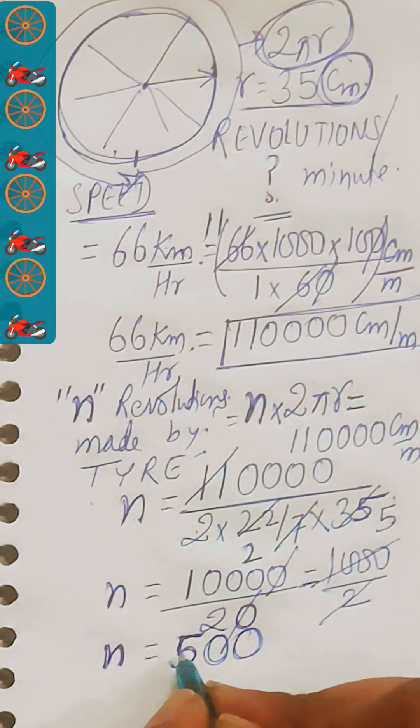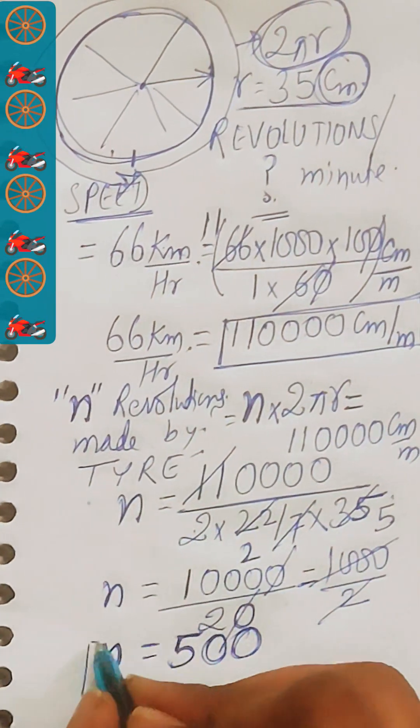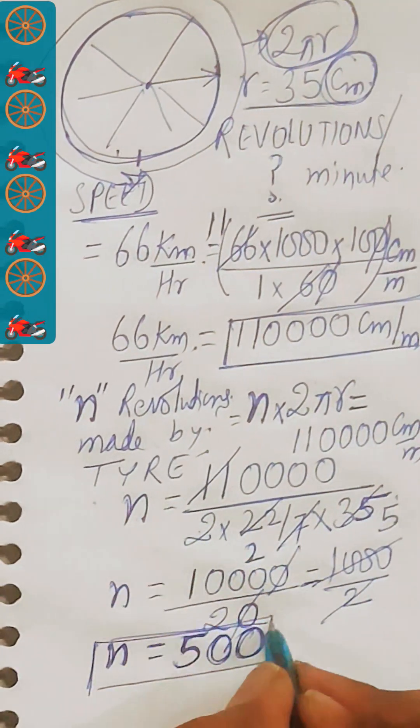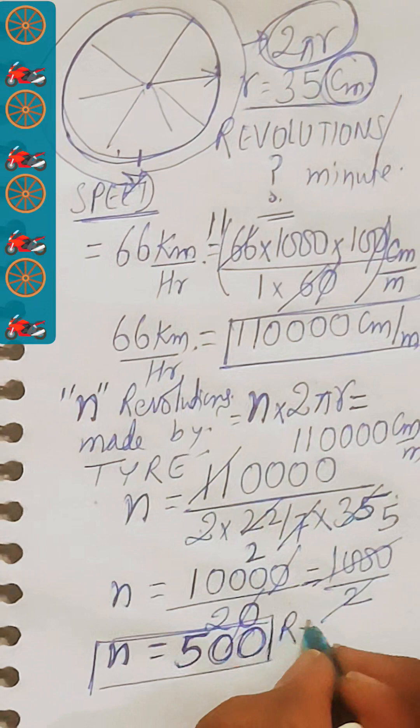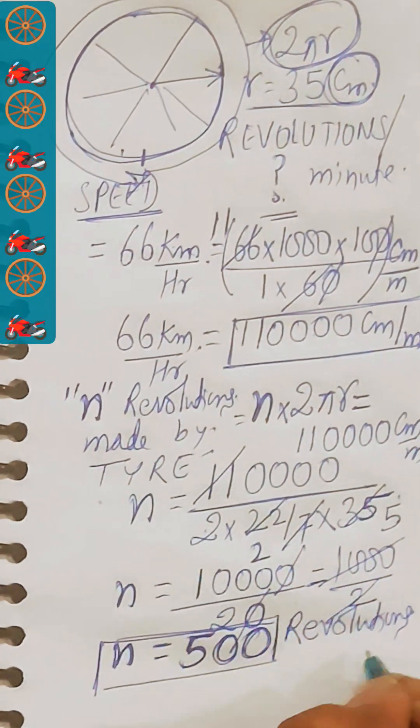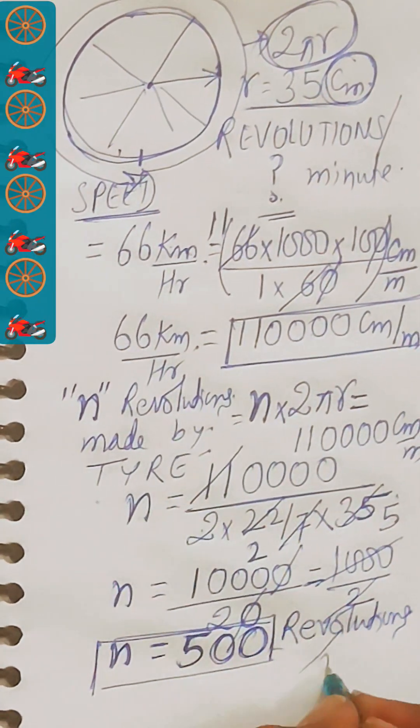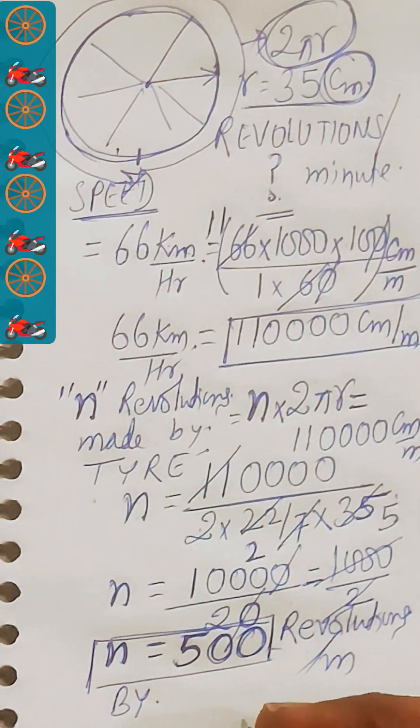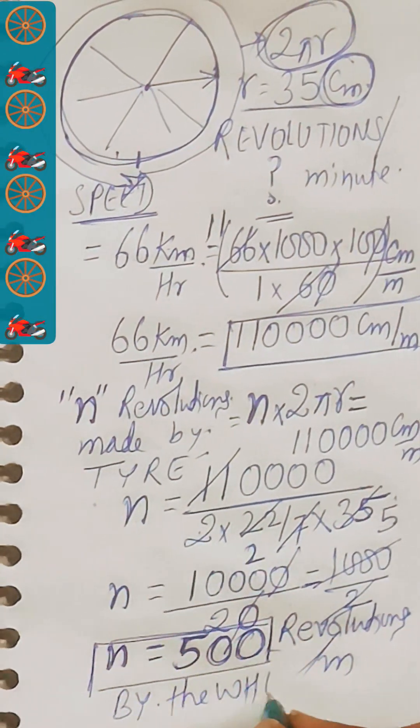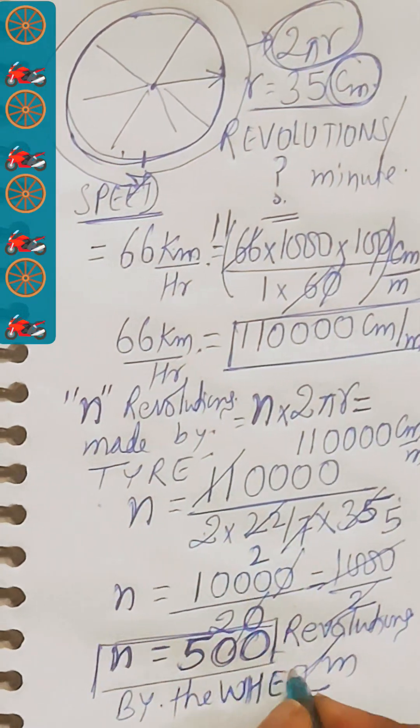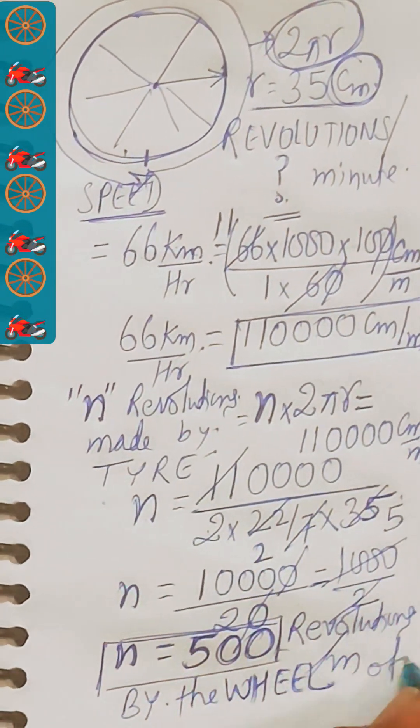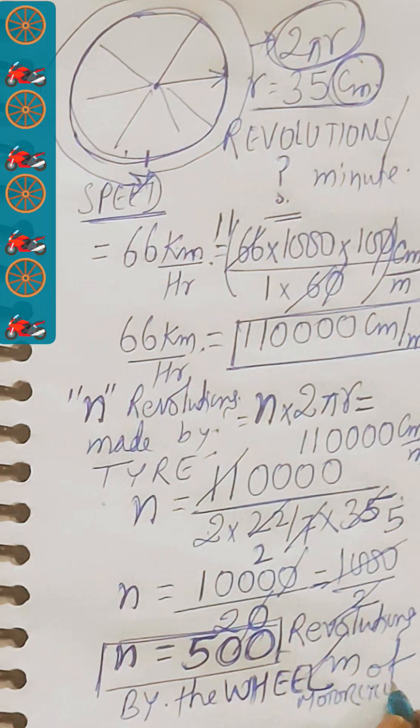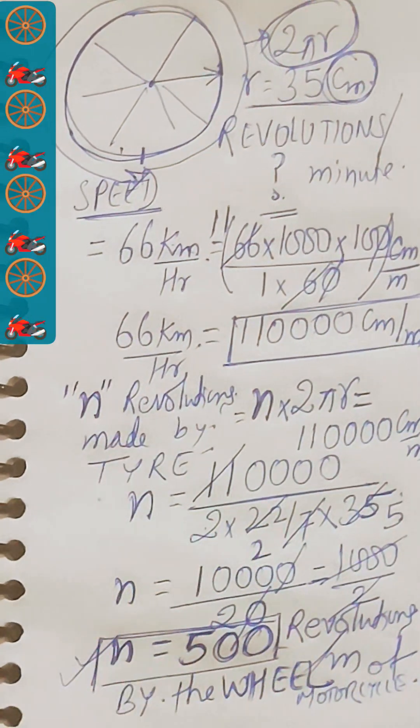That means the motorcycle tire need to revolve 500 revolutions per minute. This is the number of revolutions per minute by the wheel of motorcycle. So students, n equal to 500 is our answer.